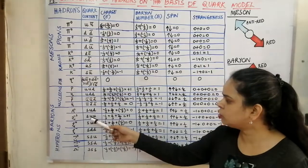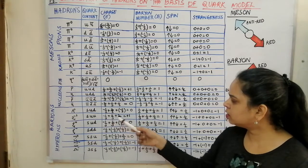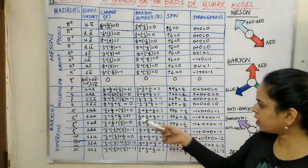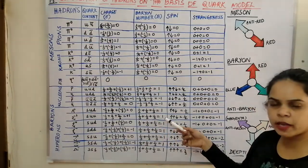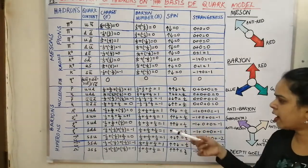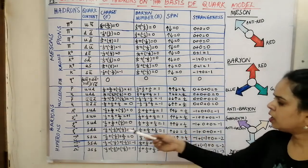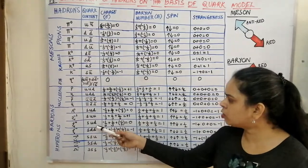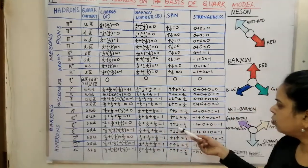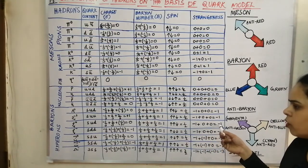For Σ⁺ (sigma positive), it is S, U, U: charge = −1/3 + 2/3 + 2/3 = +1; baryon number = 1; spin 1/2; strangeness = −1. For Σ⁰ (sigma naught), it is S, U, D: charge = 0, baryon number = 1, spin 1/2, and strangeness = −1 because there is one S quark.